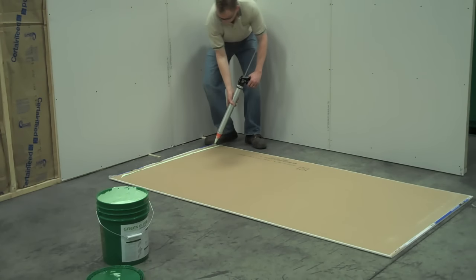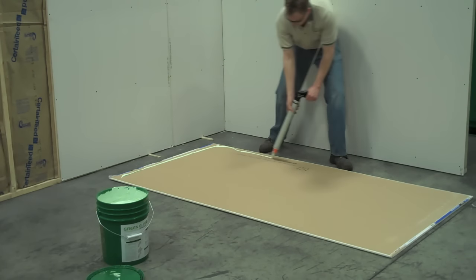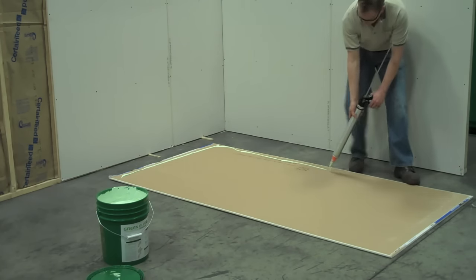Pull the trigger to dispense the compound onto the drywall, leaving a two to three inch border around the panel to allow for handling.